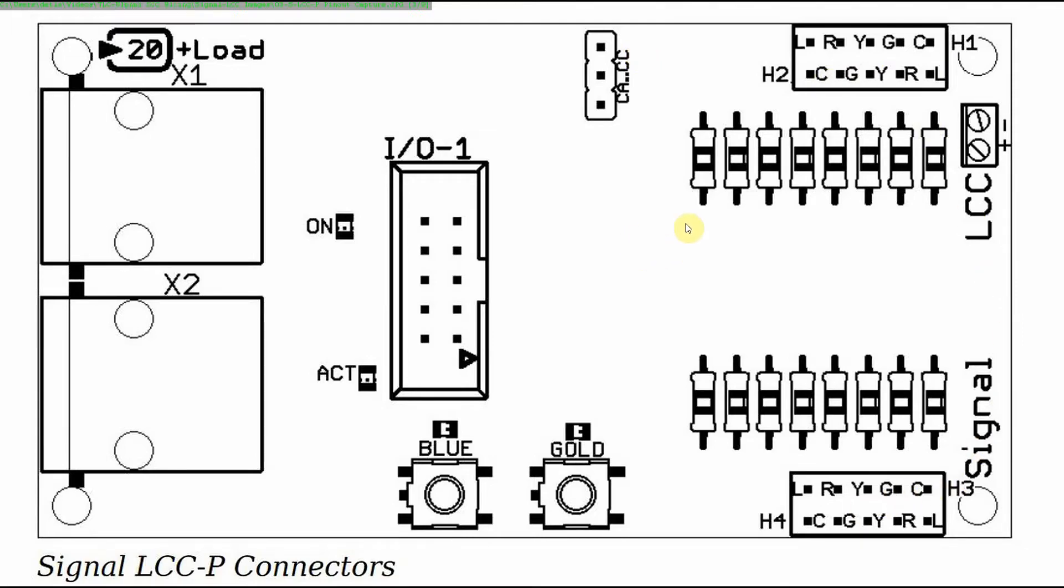As you can see, we've got the pinouts here for our four different signal heads. And again, the numbering is always clockwise. So H1 would be your first head, head one, common, green, yellow, red, and lunar, head two, H2, common, green, yellow, red, and lunar. And then you go around H3, common, green, yellow, red, and lunar. And finally, H4, head number four for the signal, common, green, yellow, red, and lunar. So the pattern repeats itself and you just work your way around clockwise.